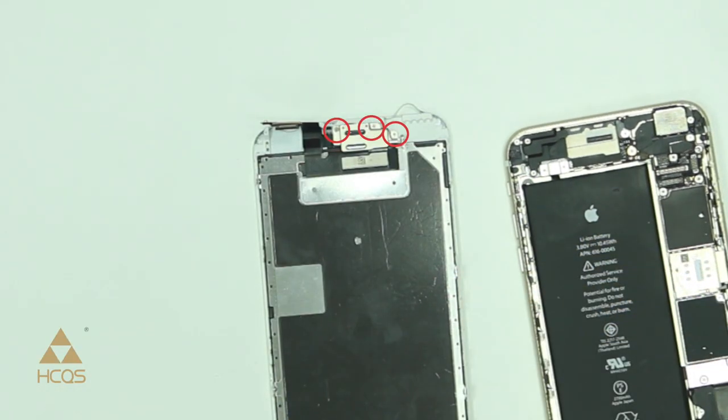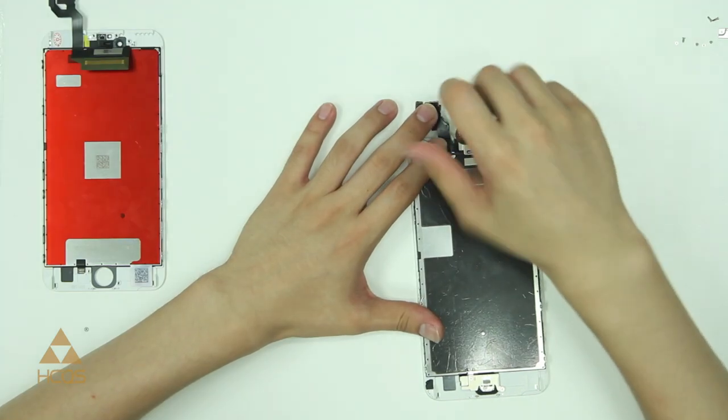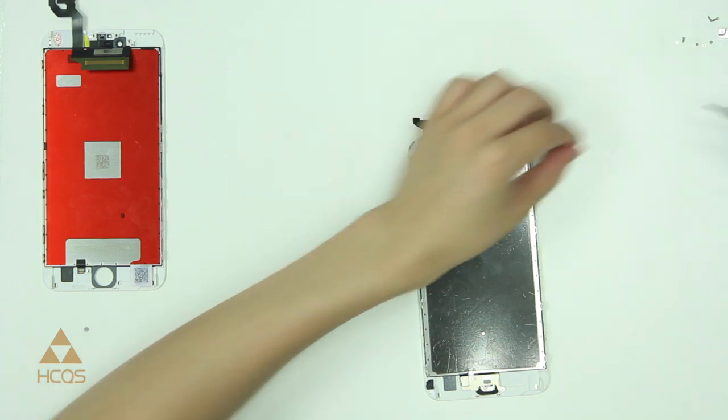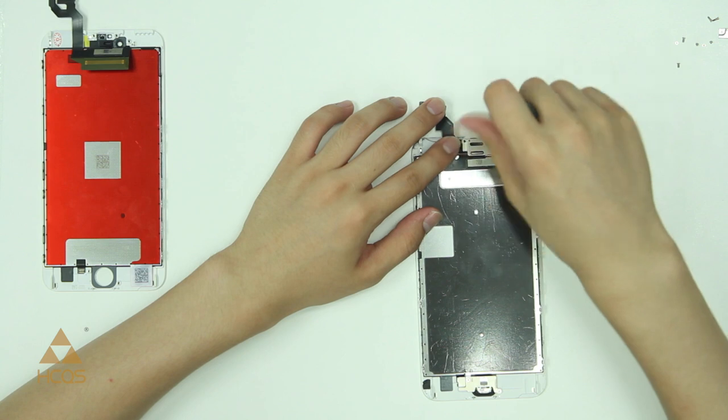There are three screws at the top that need to be removed in order to pull this shield off from behind the front facing camera and the earpiece speaker so make sure that you remove these and again keep your screws organized. We want to make sure that we do not mix these up when we go to reinstall them.